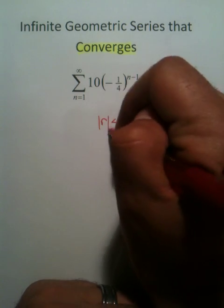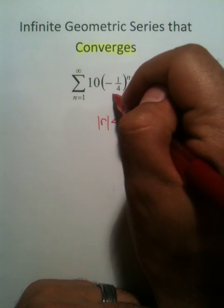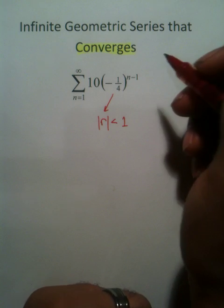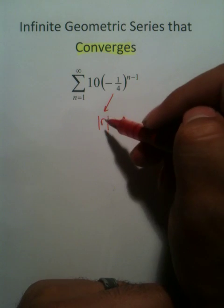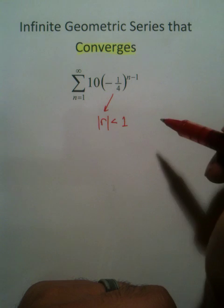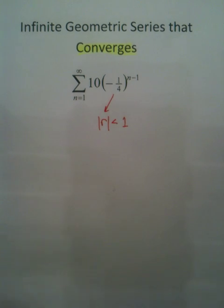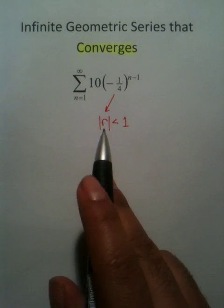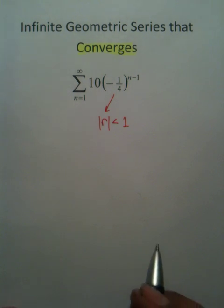Now I'm going to put absolute values around this because obviously in this problem r happens to be negative one-fourth, but if you put the absolute values it becomes positive one-fourth which is again smaller than one. So these are your indicators right here, your r value. Very key, very important to this idea.